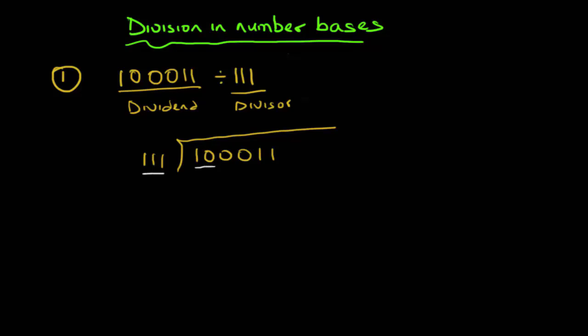The divisor has three digits, so we pick the first three digits of the dividend: '100'. The rule is: if the number inside the division symbol is less than the divisor, you put zero on top; if it's bigger, you put one on top. You're always comparing these two numbers — smaller gives zero, bigger gives one.